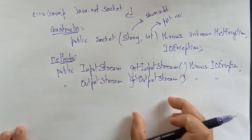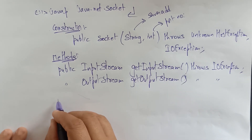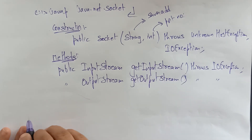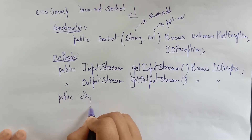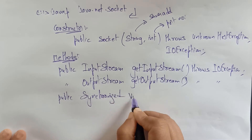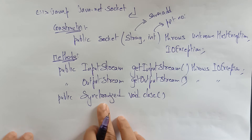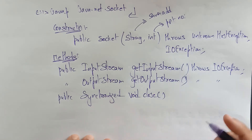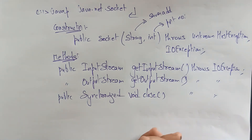I'm also going to use public synchronized void close(). This void close method is in the synchronized class and it also throws IOException. These are all the methods used in java.net.Socket.